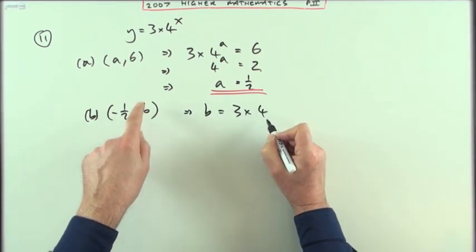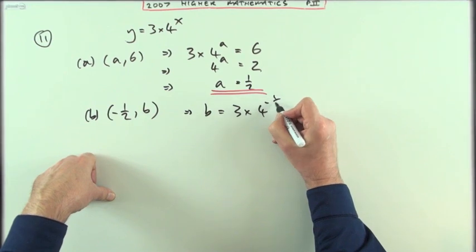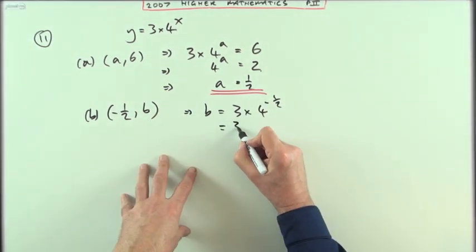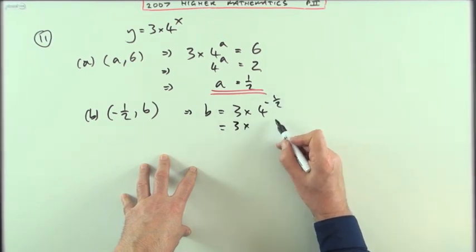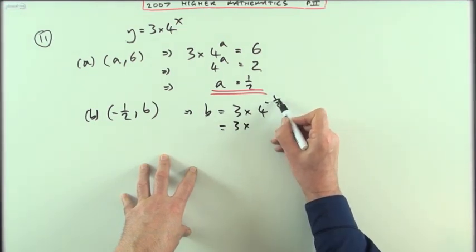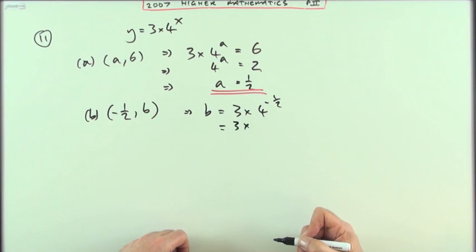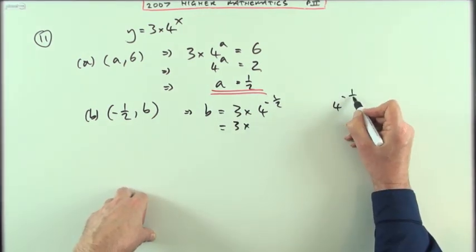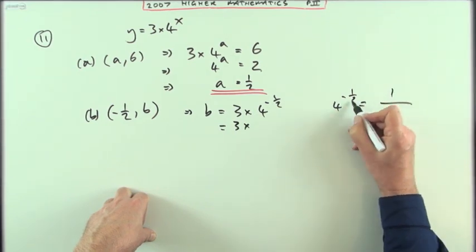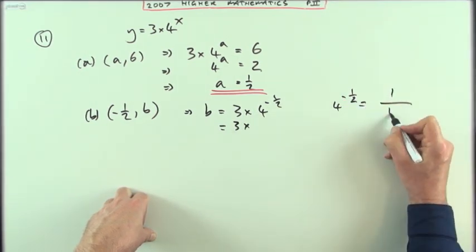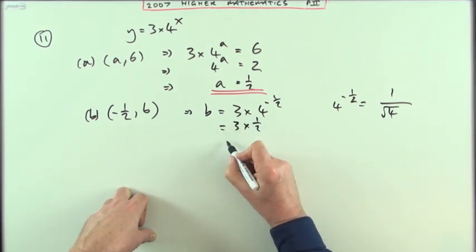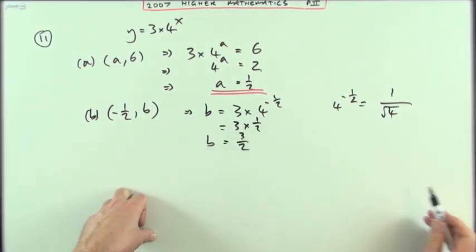3 times 4 and x is negative a half. This is just straightforward calculation. That's 3 times 4 to the negative a half. A negative power means it's a reciprocal—it's underneath. And a half means it's a square root. 4 to the negative a half means 1 over—that's the negative part—and the half means the square root. So it's 3 times a half, which means that b equals 3 upon 2.